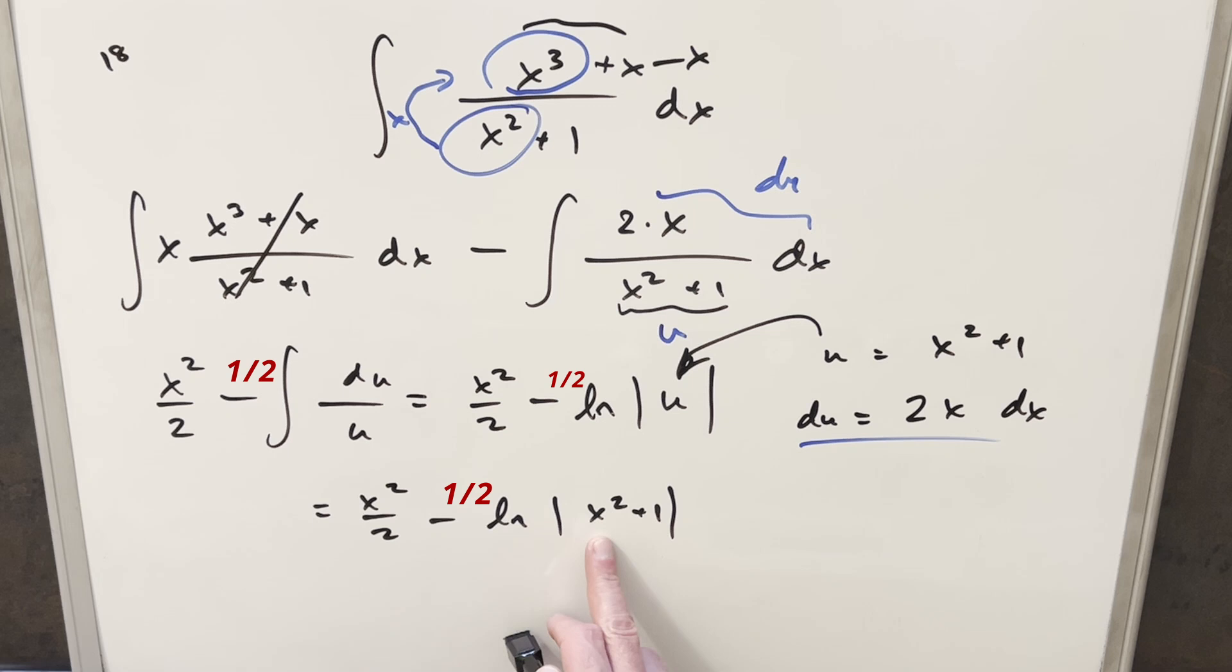But one thing you'll notice, because this term squared, this here is always going to be positive. So I'm just going to remove absolute values. Instead, we'll do parentheses plus c, and that's it.